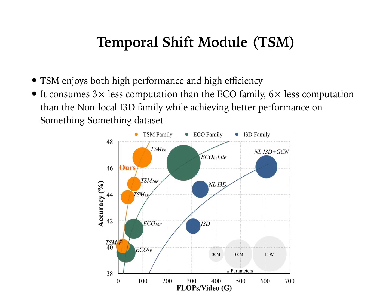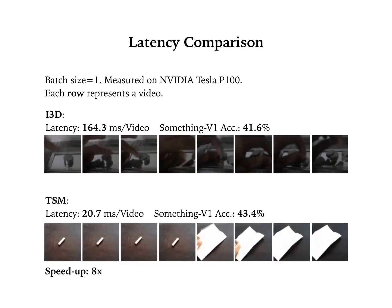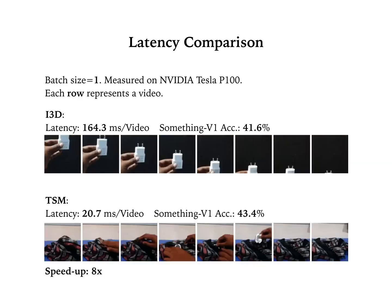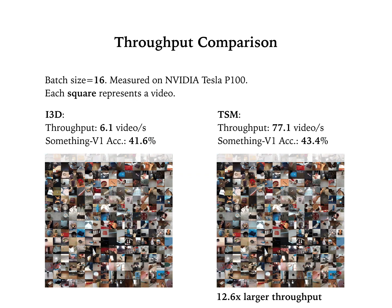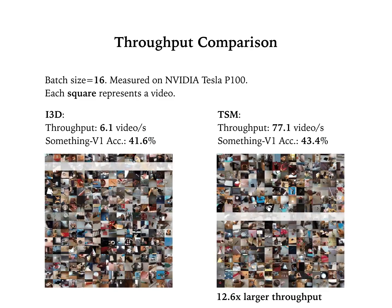TSM enjoys both high performance and high efficiency. It consumes 3 times less computation than the ECO family, and 6 times less computation than the non-local i3D family, while achieving better performance on the Something-Something dataset. In a latency comparison using batch size 1 measured on an NVIDIA Tesla P100 GPU, our model achieves 8 times faster inference than i3D. For throughput using batch size 16, our TSM has 12.6 times larger throughput compared to i3D.